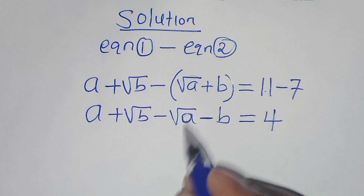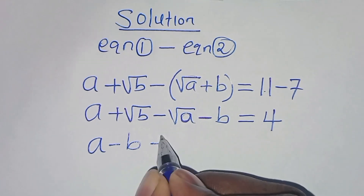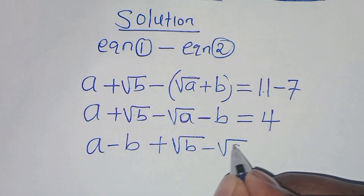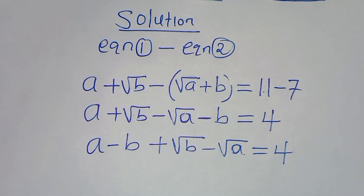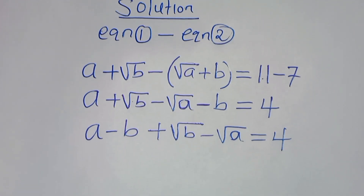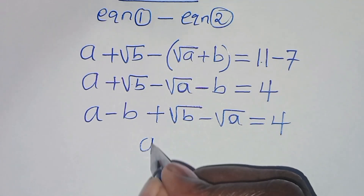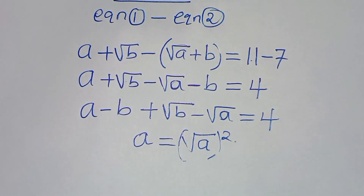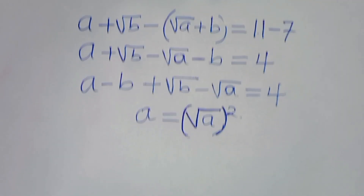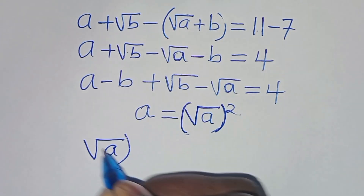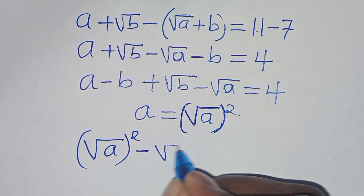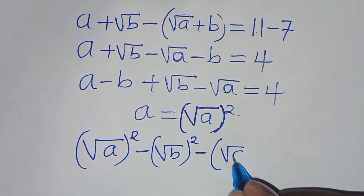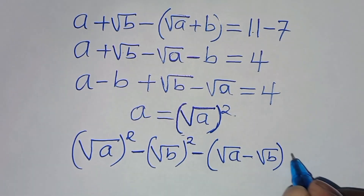This implies that we have a minus b, then plus square root of b minus square root of a. We can rewrite this as (√a)² minus (√b)², then subtract into parentheses square root of a minus square root of b, which equals 4.